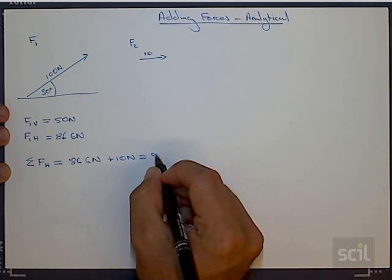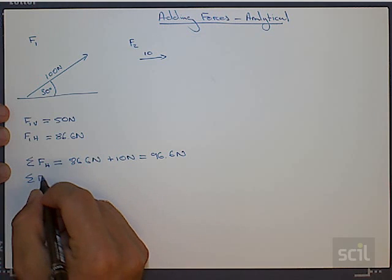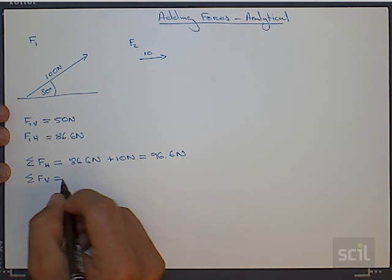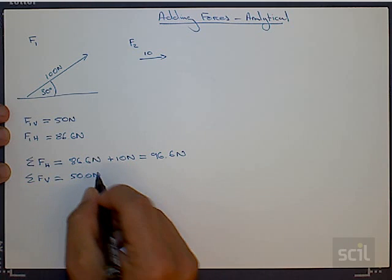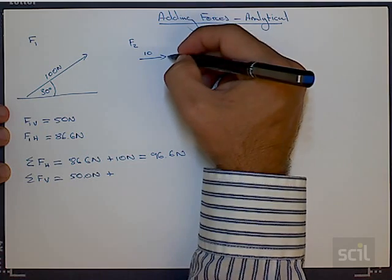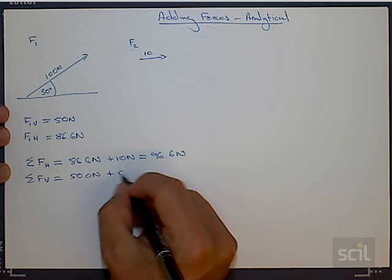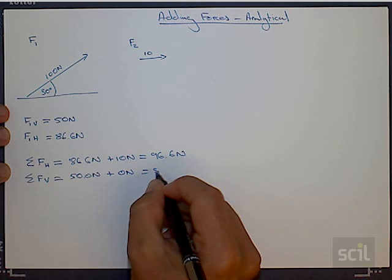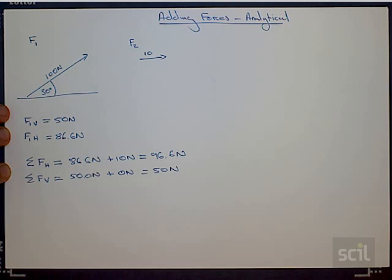Which comes out to be 96.6 Newtons. I'm also going to sum all the forces in the vertical direction, which is this one, 50.0 Newtons, plus there is no vertical component to this force—it's only going horizontally—so 0 Newtons, which obviously comes out to be 50 Newtons.